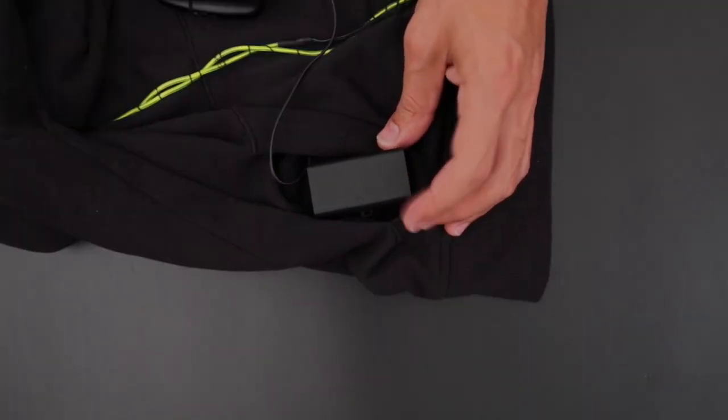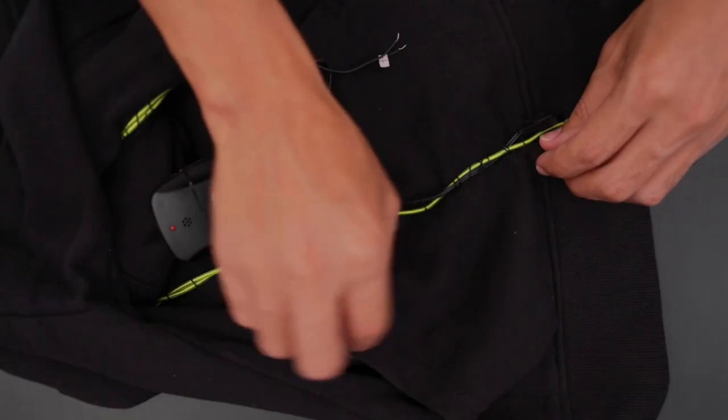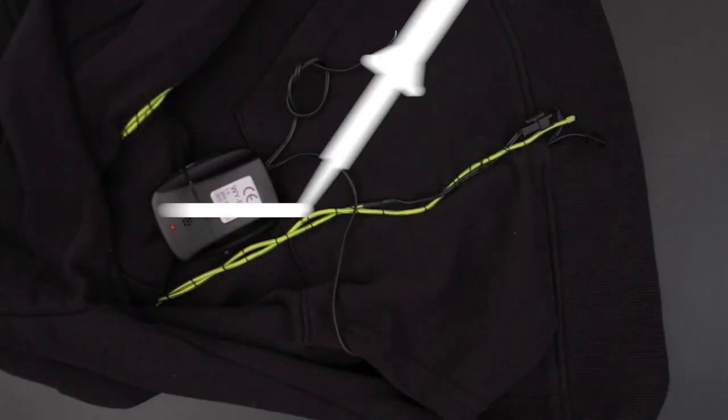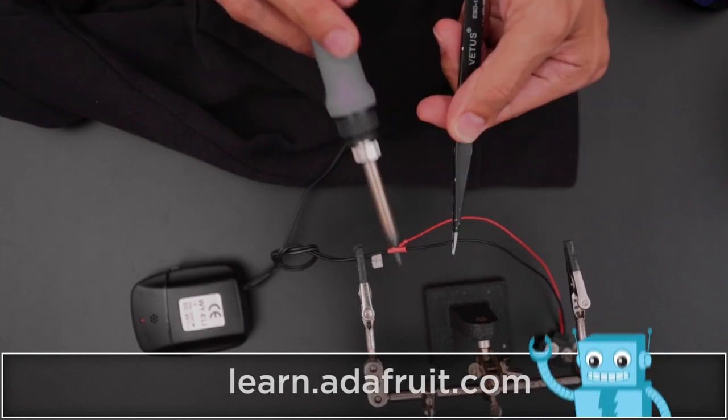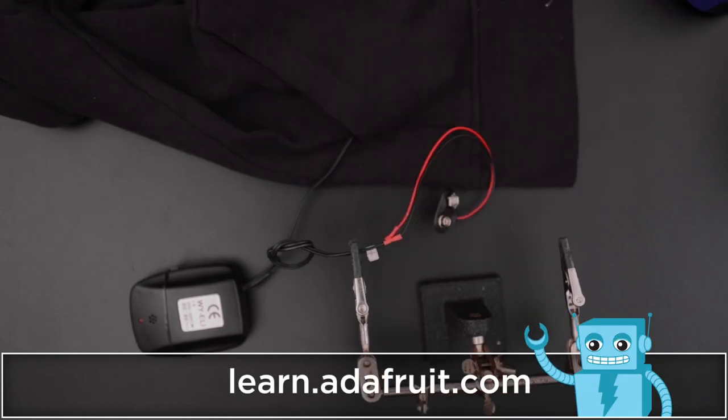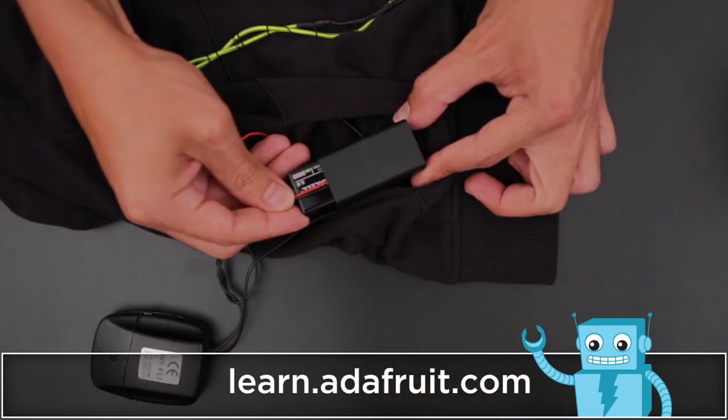This battery sleeve is 3D printed in NinjaFlex and stitched inside one of the pockets. Check out the learn guide for a full step by step tutorial on how to wire up a 9V battery to power multiple strands.